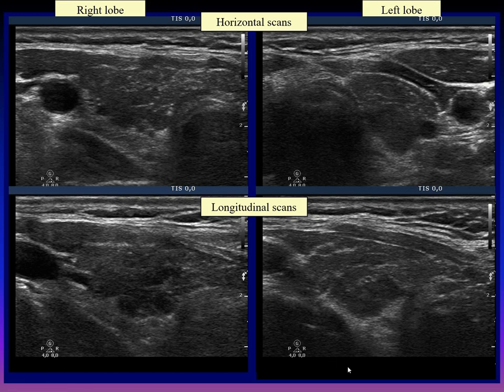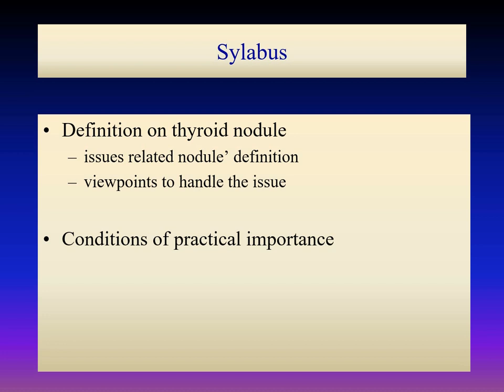So the topic is the relation between discrete lesions seen on ultrasound and true nodules — in other words, the relation between appearance and reality. First, I discuss the existing definition of thyroid nodule and its handling in everyday practice. I also present the not very abundant literature data. Thereafter, those conditions will be discussed in which the differentiation of discrete lesions has great relevance.